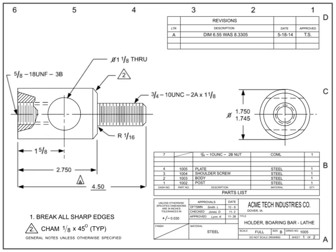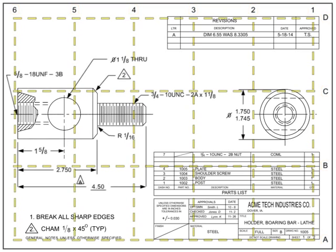Most drawings are broken out into zones using a simple alphanumeric grid. This grid is critical for large, complex drawings when discussing changes or details. The grid helps drafters and engineers pinpoint where information is located.